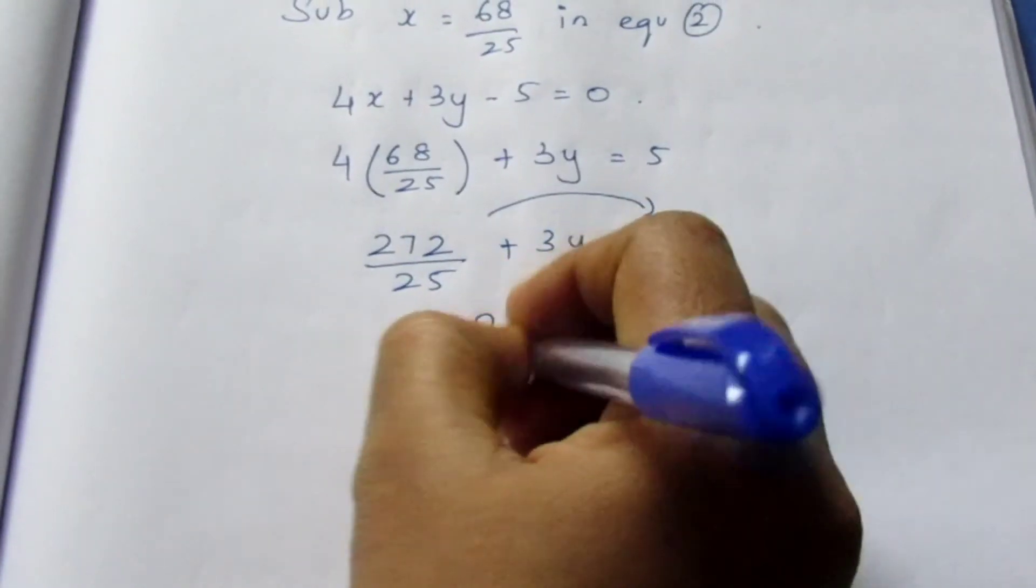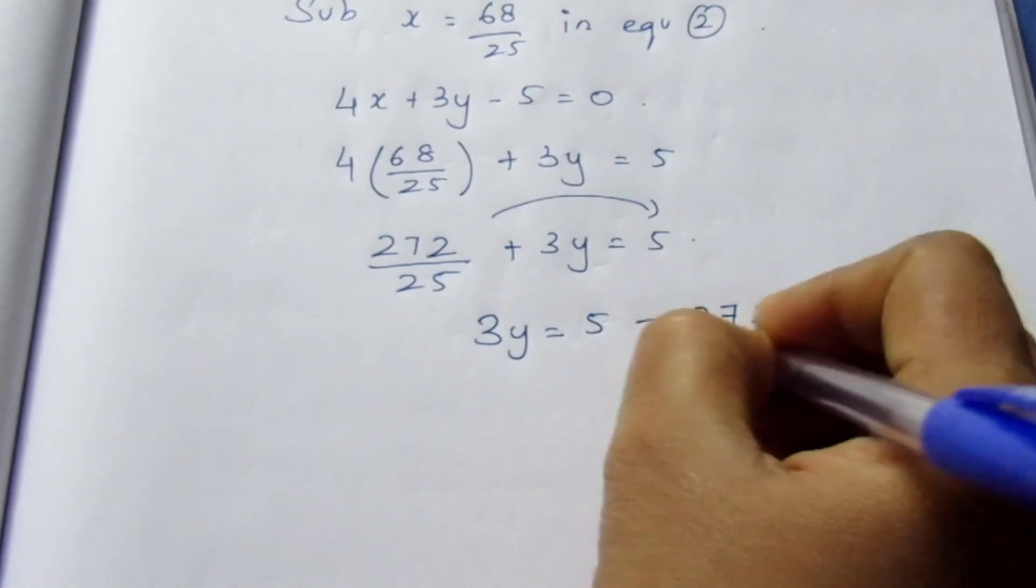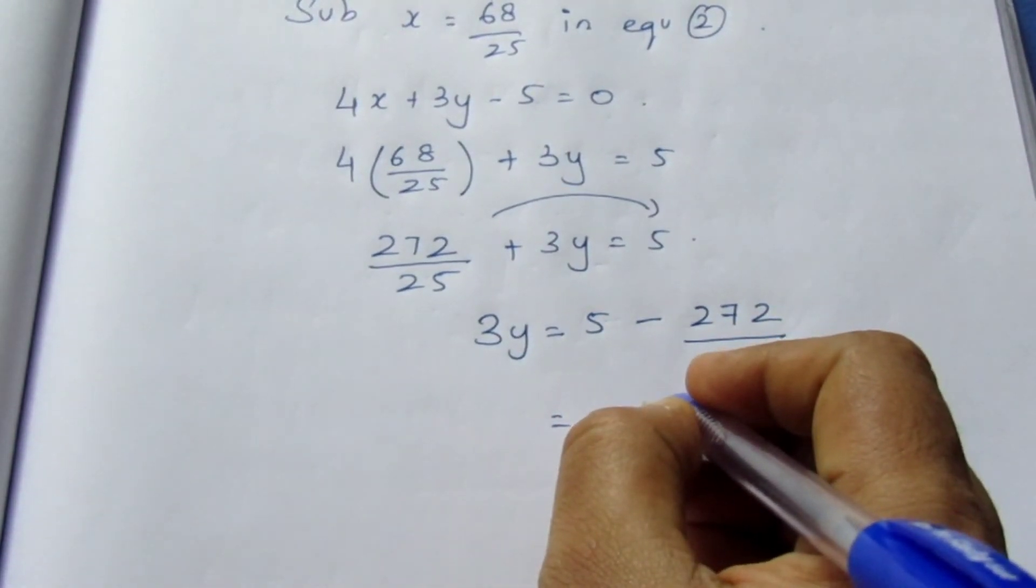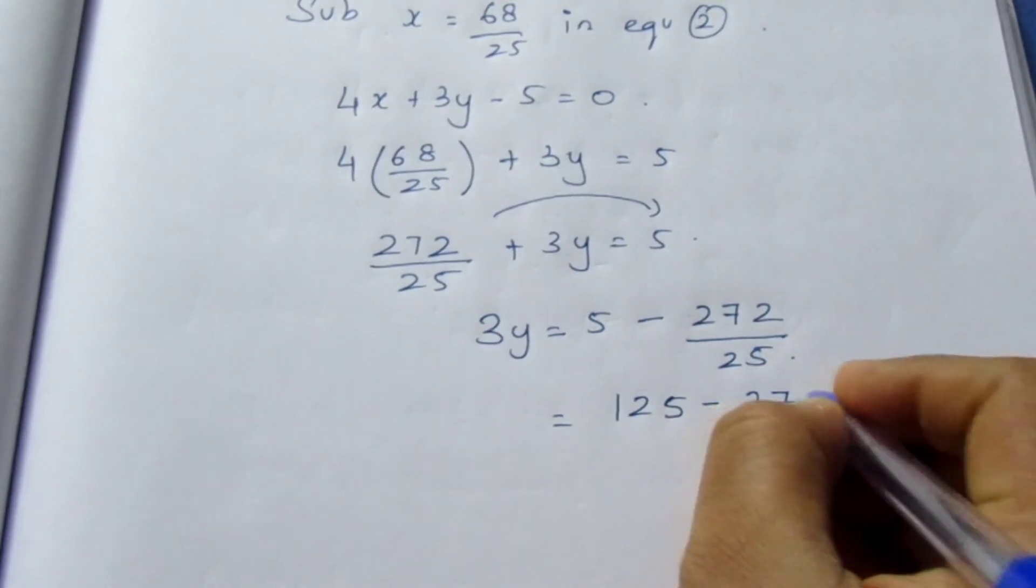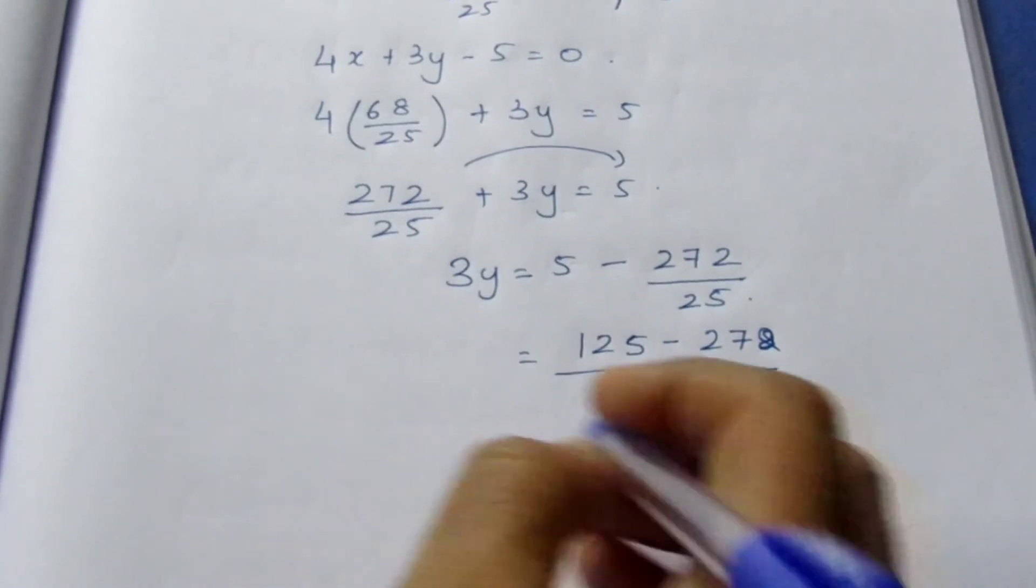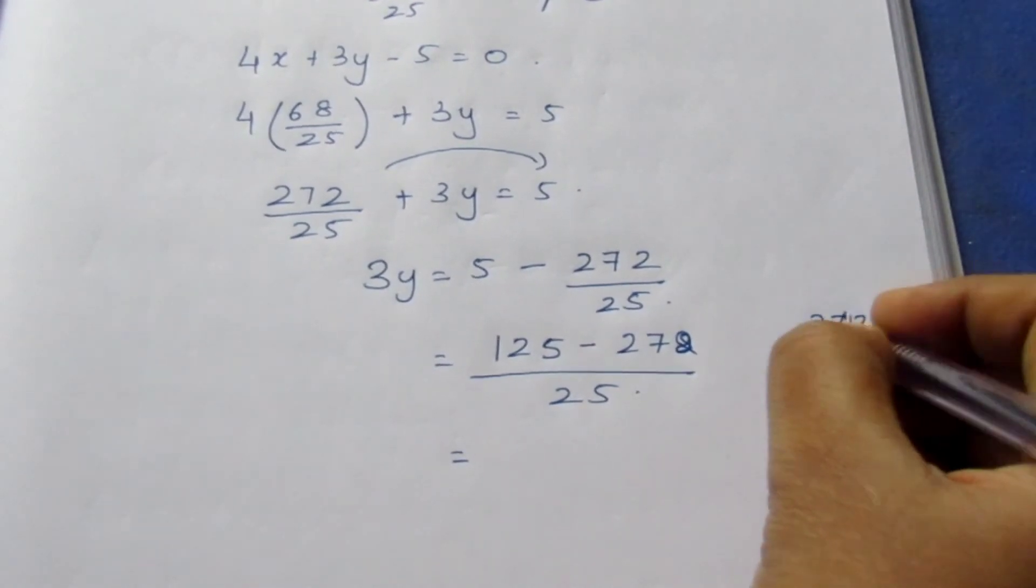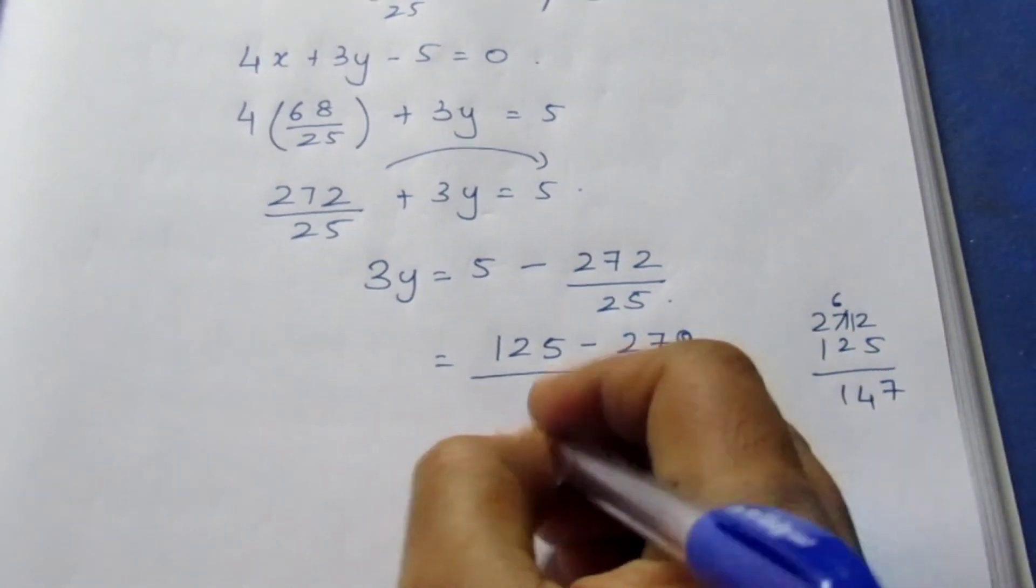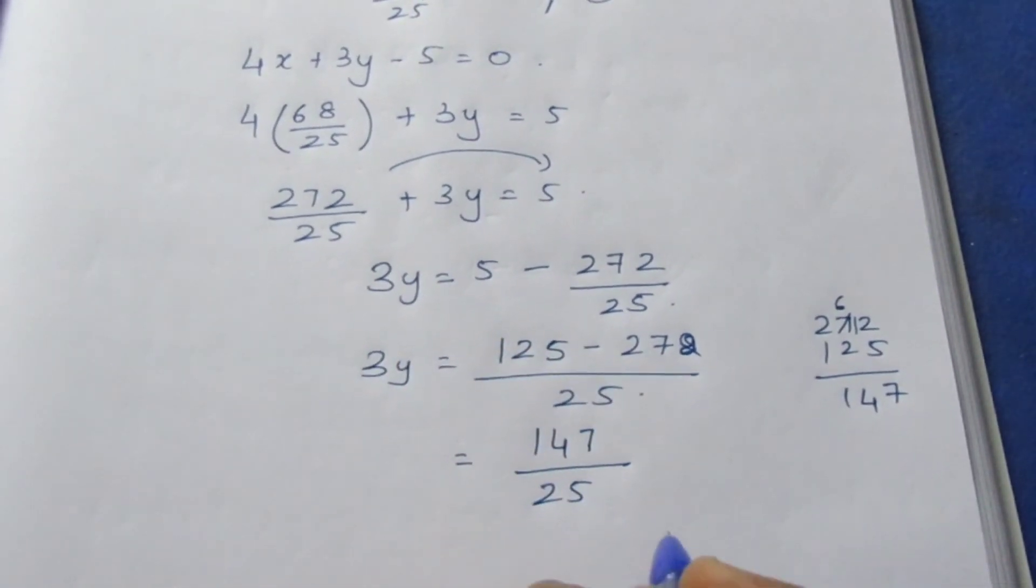Bring this to this side. So 3y = 5 - 272/25. Need to take LCM. So just multiply. 5×5 are 25, 125 - 272/25. So 272/25. Here 272 - 125, 147/25. Bringing 3 to this side, it comes and divides. So ÷3.